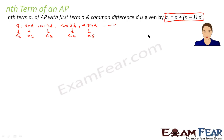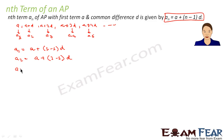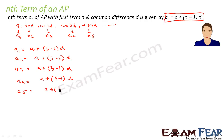Now if we have to find the general formula, let's make an observation. a1 can be written as a + (1-1)d, which is 0 times d. a2 can be written as a + (2-1)d. a3 can be written as a + (3-1)d, because a3 is a + 2d. Similarly, a4 is a + (4-1)d and a5 is a + (5-1)d.